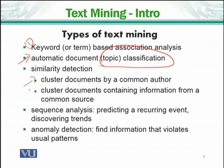The fourth type is sequence analysis, which involves predicting a recurrent event and discovering trends. For example, if we talk about an election, we want to see which party will form the government. We analyze and predict current events to determine which parties are gaining more support. This prediction falls under sequence analysis.